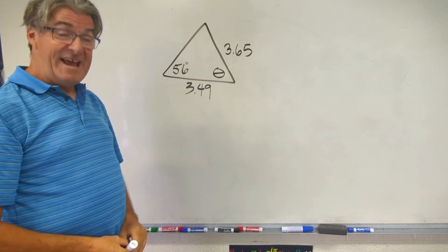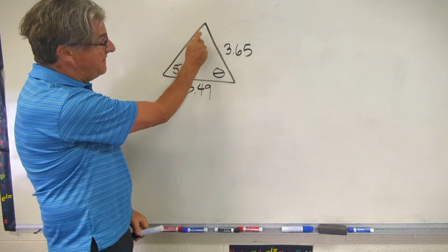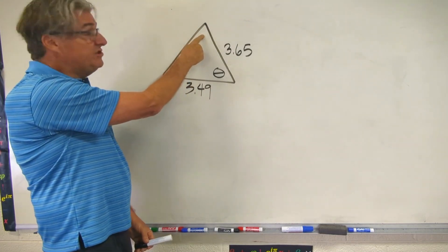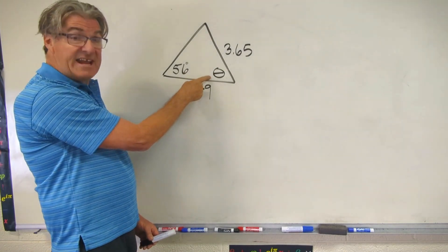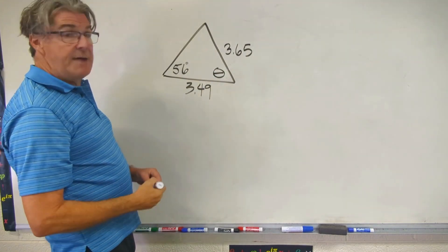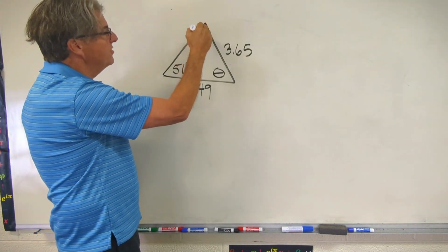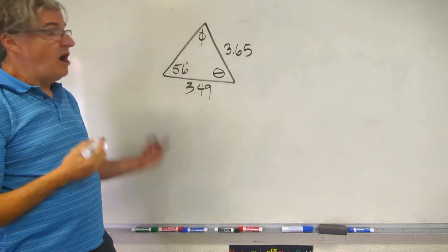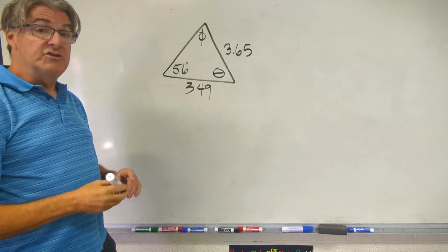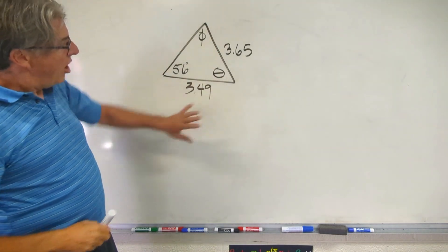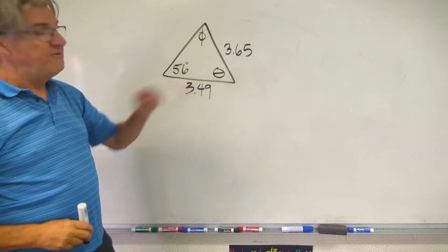But what you can do is you can find this angle. And once you find that angle, you can subtract it and 56 from 180 to get that angle. So let's do that. I'm going to go ahead and call this angle with our phi, and then I'm going to go ahead and find phi. But now that you've got the tips, why don't you pause the video and work all of this through. First find phi and then find theta.